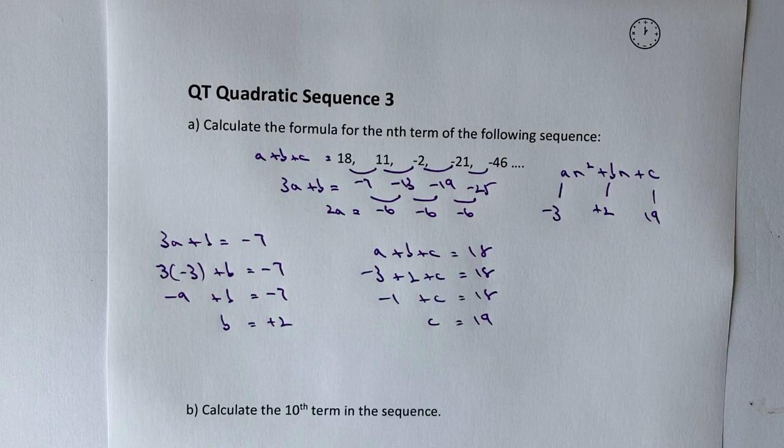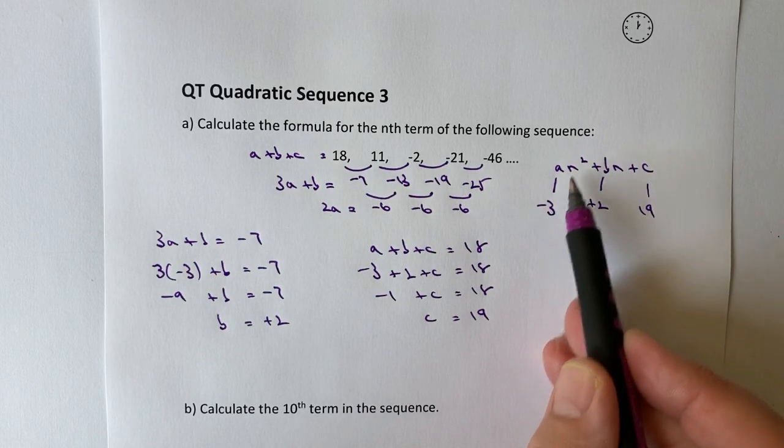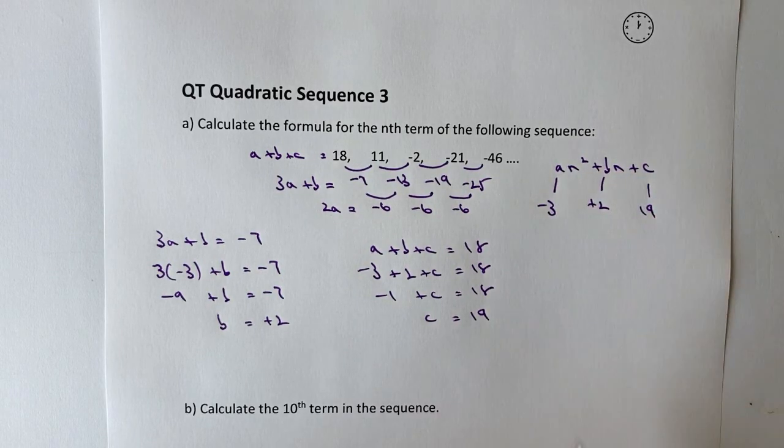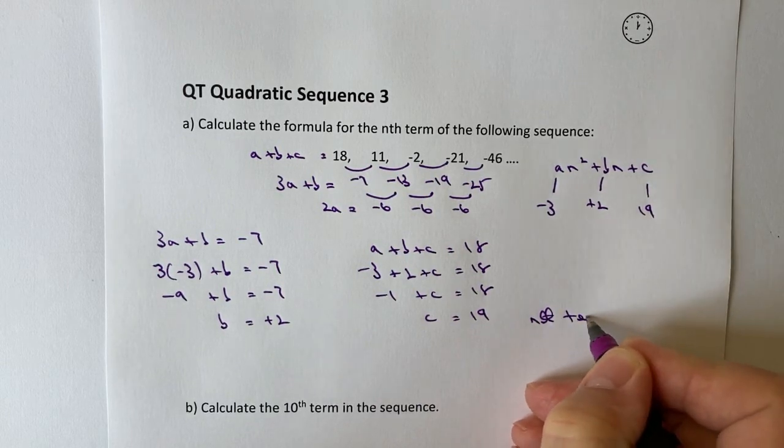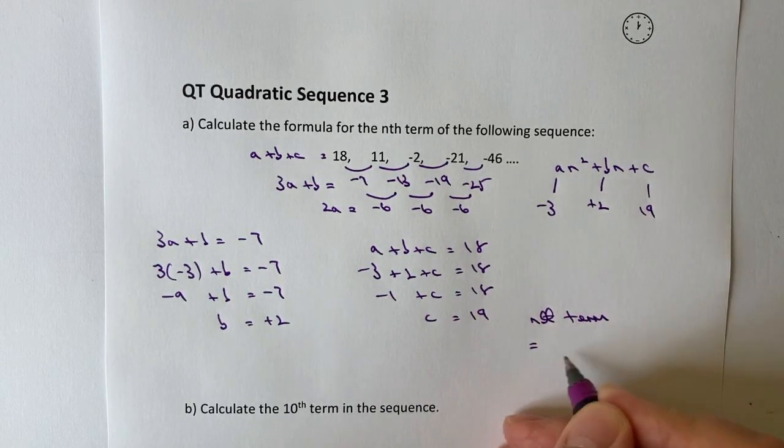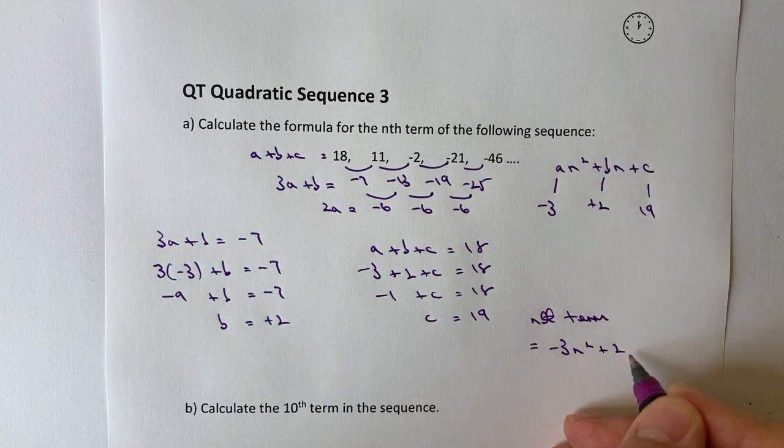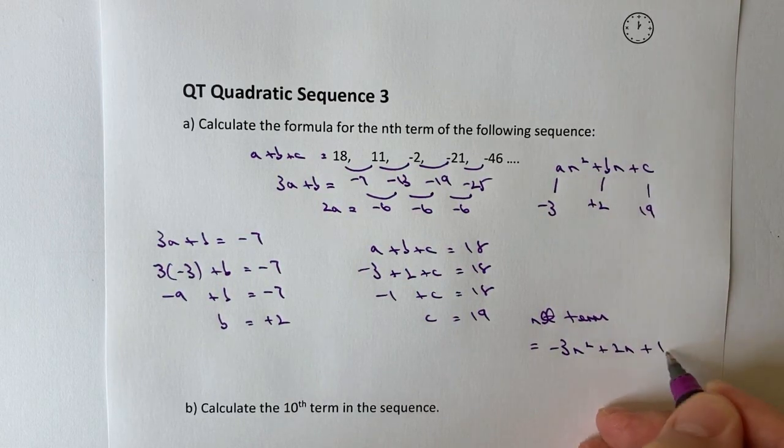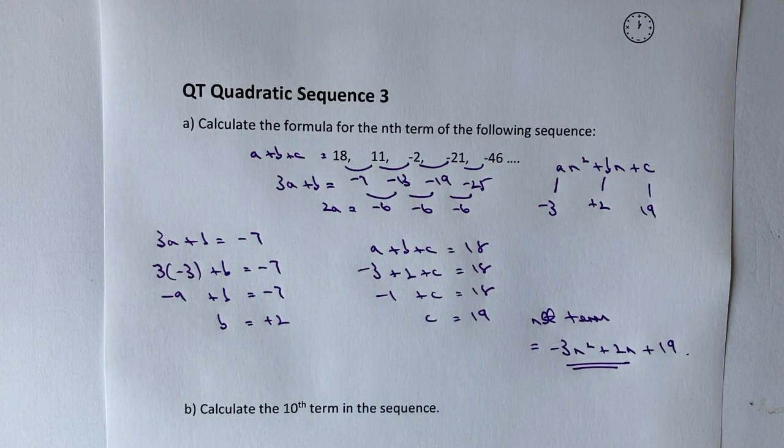So if I put all of that together, rather than writing an squared plus b plus c, I can write that as the nth term equals minus 3n squared plus 2n plus 19, and that would be the answer to the first part of the question.